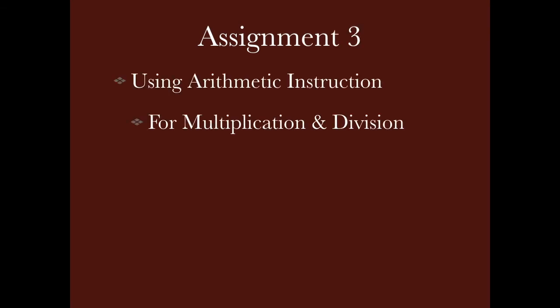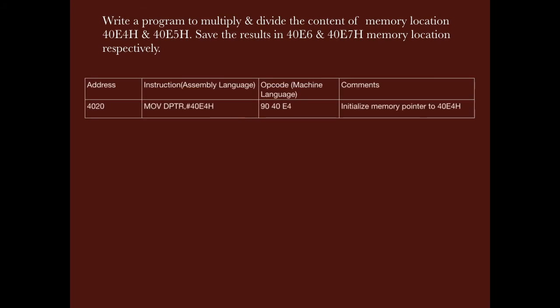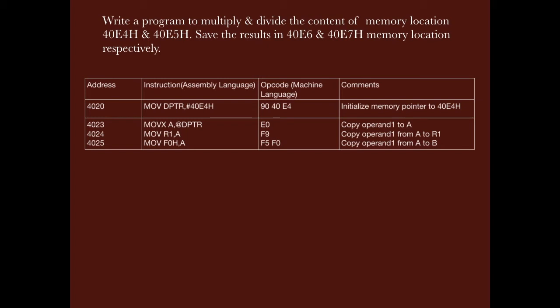Now we have the third assignment: multiply and divide the contents of memory locations 40E4H and 40E5H, and save the results in 40E6H and 40E7H. The program is written from address 4020H. The next instruction is at 4023H because the first instruction MOV DPTR, #40E4H takes 3 bytes — 90, 40, and E4 are the machine code for this instruction. This is how addresses are assigned depending on the number of bytes required per instruction.